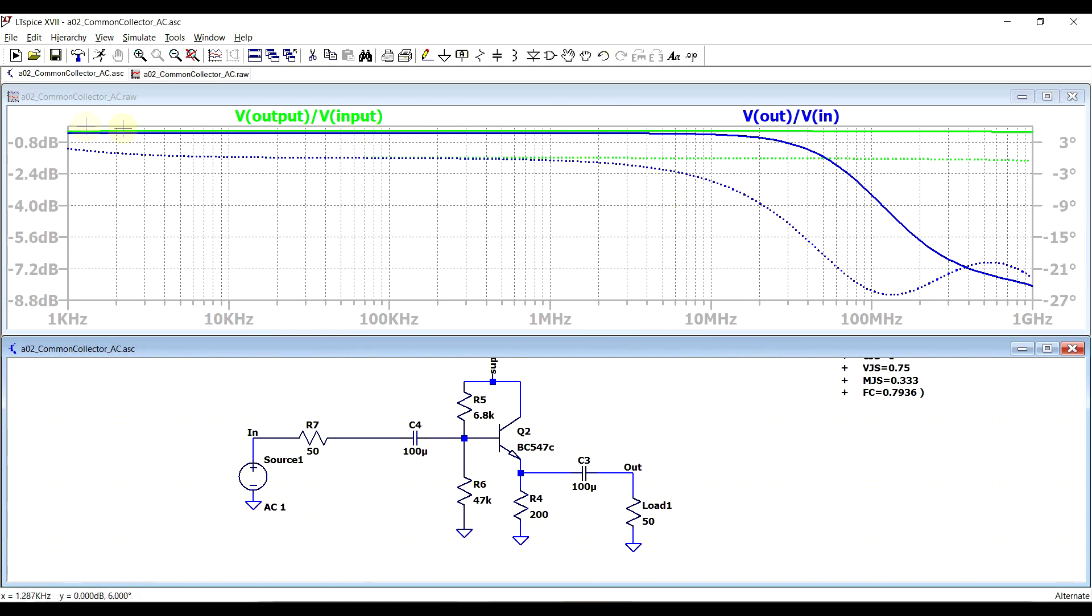So at some frequency, the amplifier will no longer be able to amplify, and the signal source has some non-zero impedance. Once the amplifier inputs impedance becomes comparable to the signal source impedance.